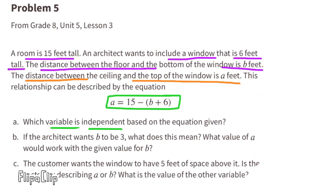Problem number 5 from 8th grade Unit 5 Lesson 3: A room is 15 feet tall. An architect wants to include a window that is 6 feet tall. The distance between the floor and the bottom of the window is B feet. The distance between the ceiling and the top of the window is A feet. This relationship is described by the equation A equals 15 minus (B plus 6). Part a: Which variable is independent based on the equation given?